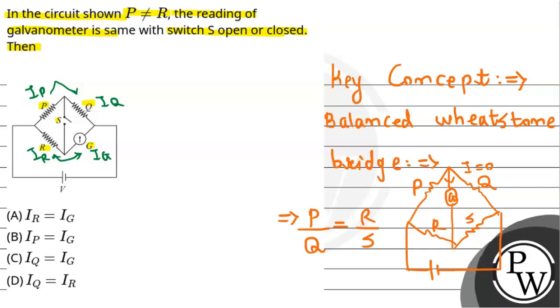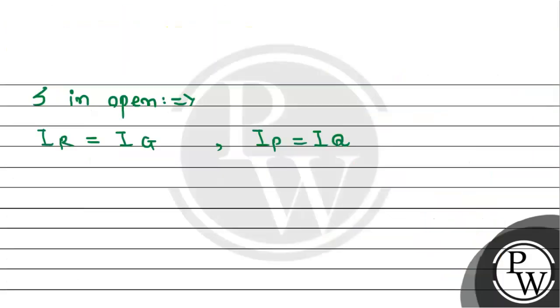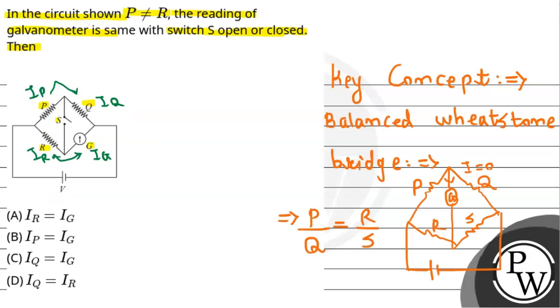Therefore, IP equals IQ. The current flowing through S will be zero.